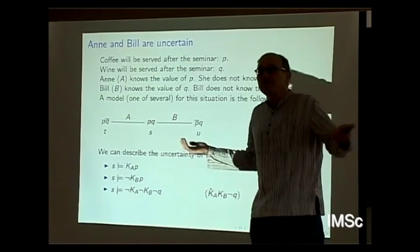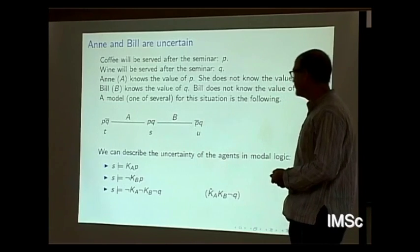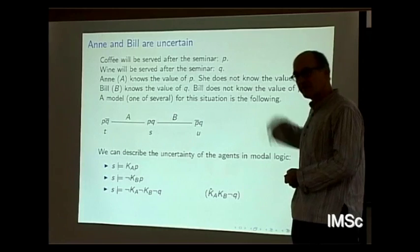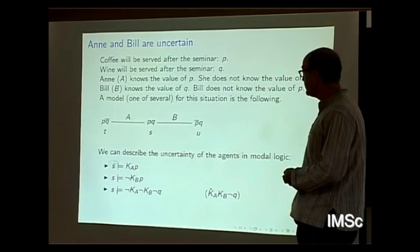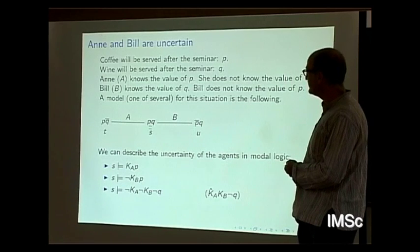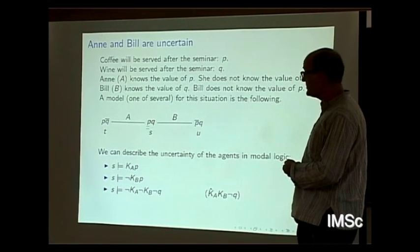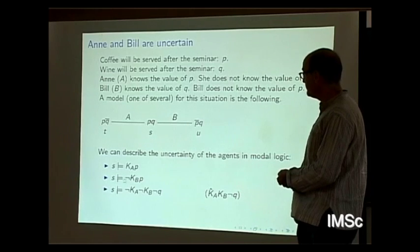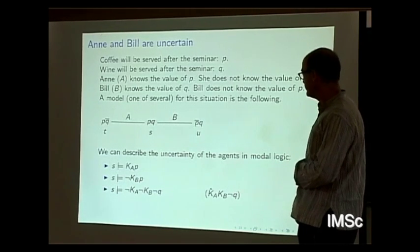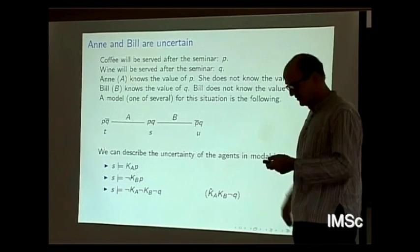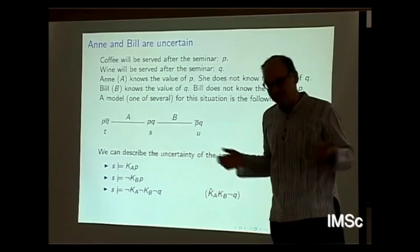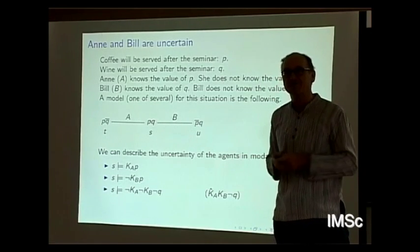That's a Kripke model — a Kripke model with equivalence relations. We can describe the uncertainty of A and B in modal logic. For example, in state S, N knows that P is true because P is true in all indistinguishable states. But in state S, B doesn't know that P is true, because B considers it possible. I have the tendency to write a hat over the K operator to indicate that it's a diamond and not the box version of the modal operator.